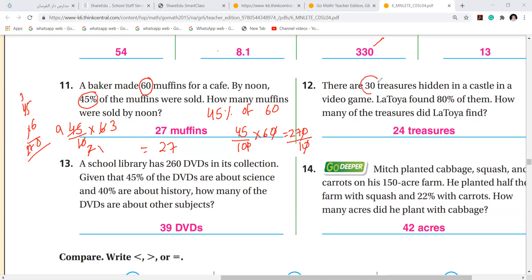There are 30 treasures hidden in a castle in a video game. Latoya found 80% of them. 80% of them means of 30. That is 80 over 100 times 30. Now I have 1 zero, 1 zero. I have one more zero here, so I will cancel the zero. Now you got it. So my answer is 8 times 3, that is 24.